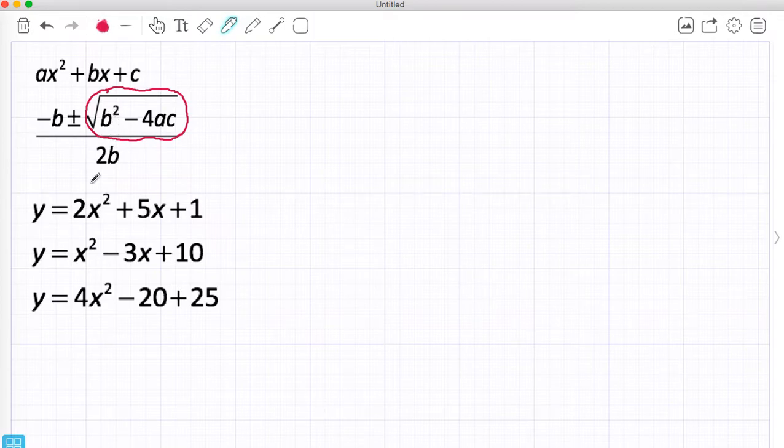I can ignore the rest of the quadratic formula and just concentrate on this. We're going to have a look at putting in these values into this discriminant to begin with. So A is 2, B is 5 and C is 1. So B squared gives me 25 minus 4 times 2 which is 8 times 1 which is 8, so it's minus 8.